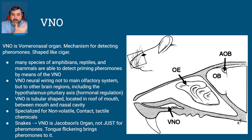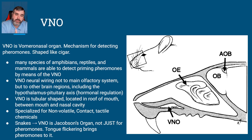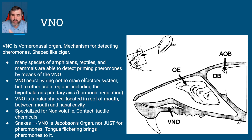Lots of amphibians, reptiles, and mammals are able to detect pheromones by means of the VNO. It has different neural wiring than the main olfactory system and is specialized for non-volatile chemicals. In chemistry, volatile means a chemical that easily evaporates — like alcohol or ammonia. Non-volatile chemicals, like salts, don't evaporate. These pheromones are preferably non-volatile — they're not going anywhere; they're usually heavier, bigger molecules.